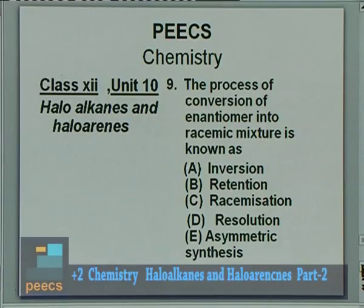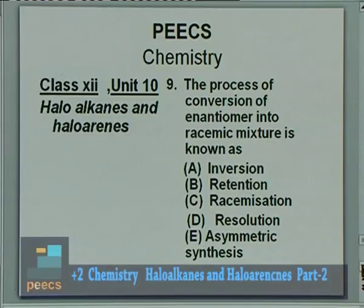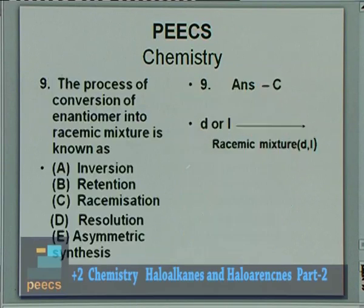Question 9: The process of conversion of an enantiomer into a racemic mixture is known as — options are inversion, retention, racemization, resolution, asymmetric carbon atom. The correct answer is C — racemization.